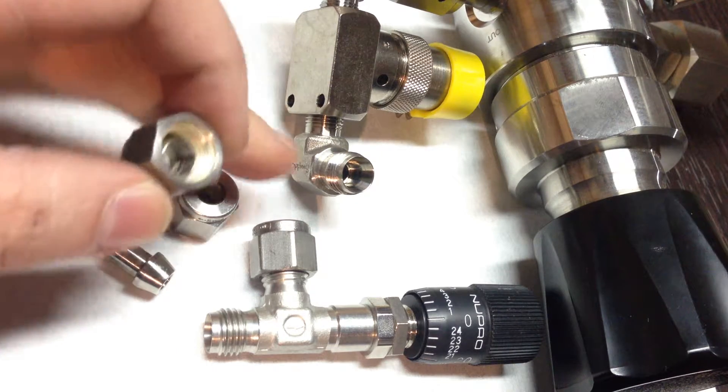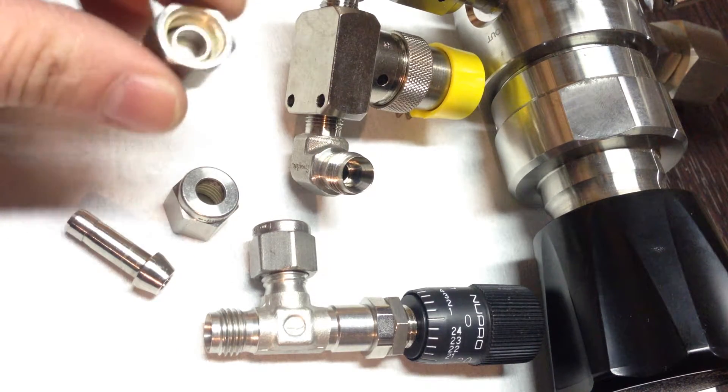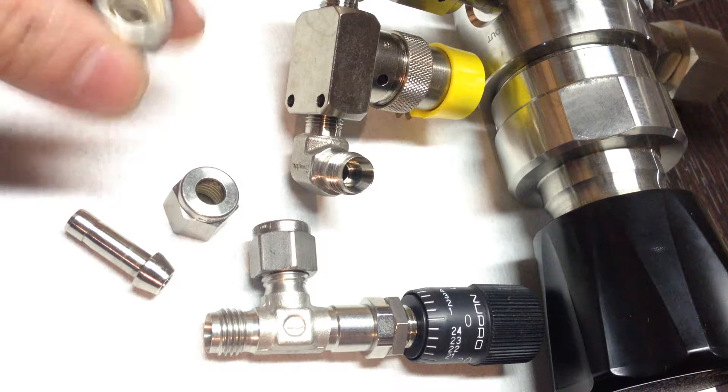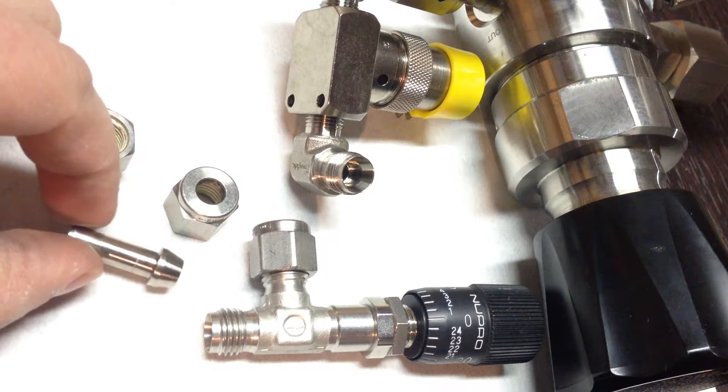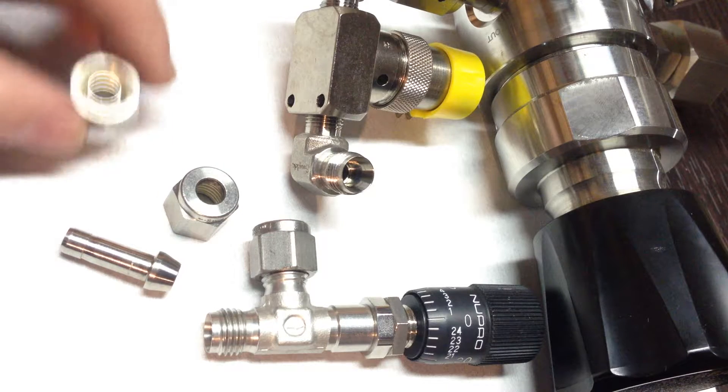Some elbows come with this nut with ferrules inside. Since we're using the support connector here, I'm not going to need the ferrules.